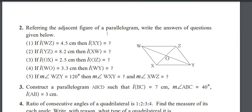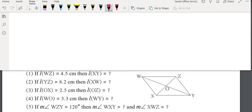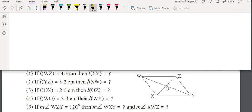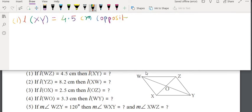Now the next question. Referring to the adjacent figure of the parallelogram WXYZ, if the length of WZ is equal to 4.5 cm, then XY is also 4.5 cm, because opposite sides of a parallelogram are congruent. So length of XY equals 4.5 cm.